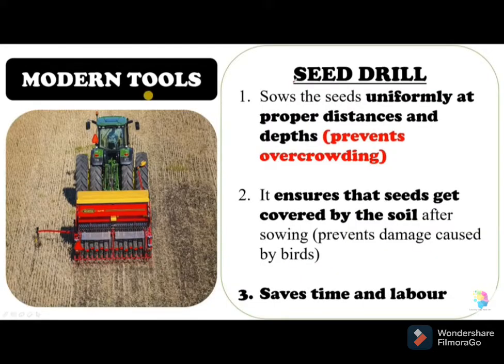The third method is the seed drill, which is a modern method of sowing. Nowadays the seed drill is used with the help of tractors. The benefit of the seed drill is that seeds are sown uniformly at proper distance and proper depth, preventing overcrowding. If seeds are sown too close, the seedlings cannot get sufficient sunlight or nutrients from the soil. Proper distance between seeds is maintained by the seed drill.